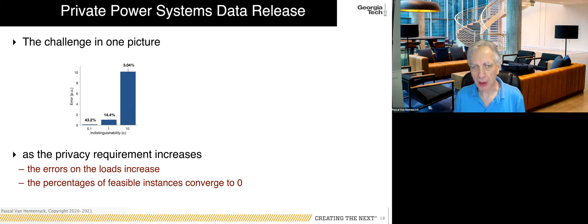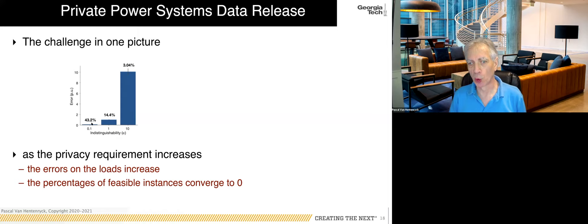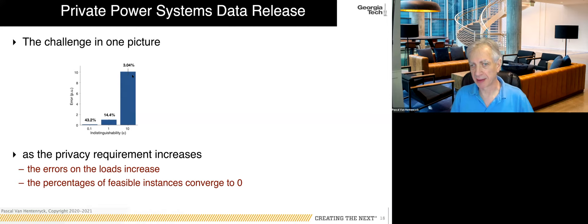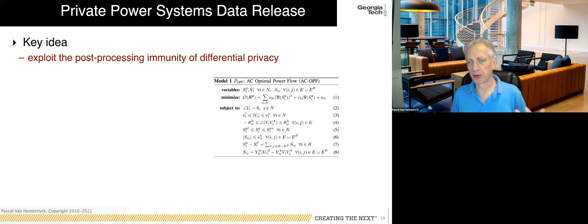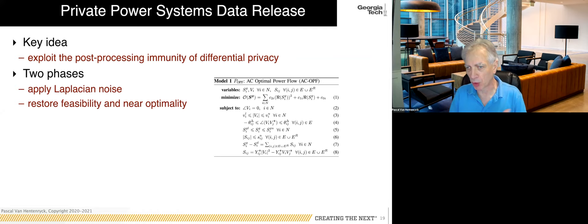The challenge is illustrated here: as the indistinguishability factor varies from 0.1 to 10 megawatts, the number of feasible instances when noise is added drops very quickly — to only about three percent. So directly adding noise creates infeasible instances most of the time, making it very difficult to generate meaningful test cases. This is where post-processing immunity comes in.